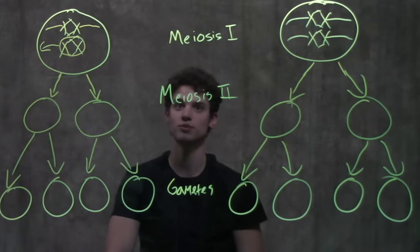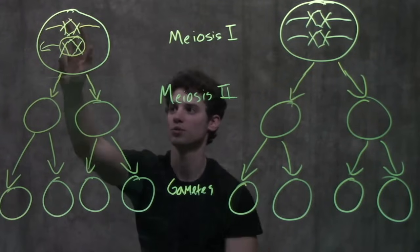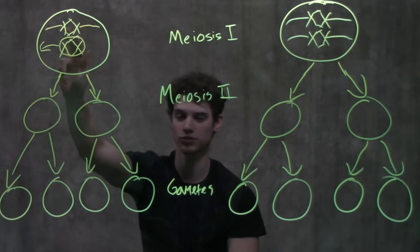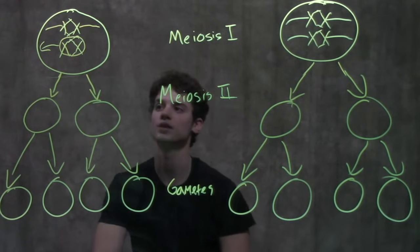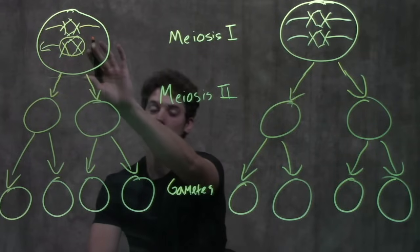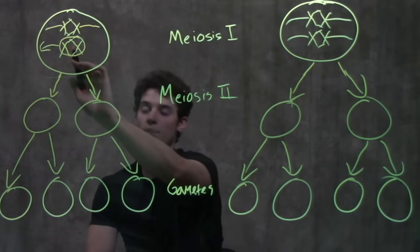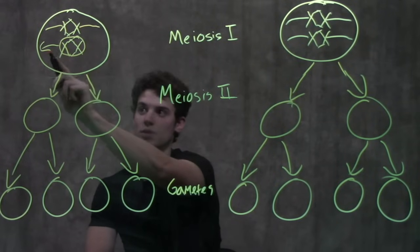Beginning with nondisjunction in meiosis I, the homologous chromosomes are lined up on the metaphase plate during metaphase. Then when they separate during anaphase, a pair doesn't separate correctly, meaning they both go to one side of the cell.